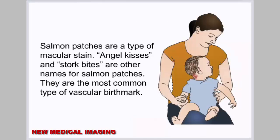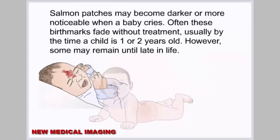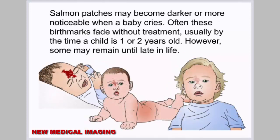Salmon patches are a type of macular stain; angel kisses and stork bites are other names for salmon patches. They are the most common type of vascular birthmark. Salmon patches are light red marks often found on the forehead, eyelids, or back of the neck; they may also be found on the upper lip, nose, or back of the head. They may become darker when a baby cries, but often fade without treatment, usually by age one or two, though some may remain until later in life.